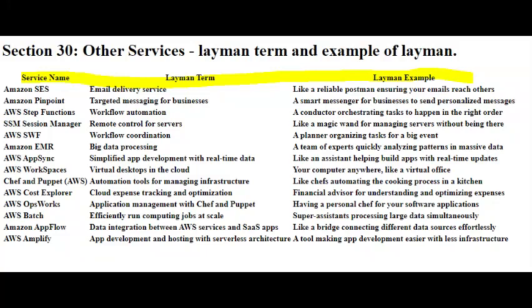AWS Batch is like a super-efficient worker that helps you process a large amount of data or run many computing tasks at once. It's a tool that handles the heavy lifting of managing and running your computing jobs, so you can focus on getting the results you need.